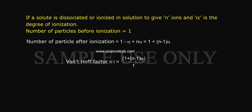Van't Hoff Factor I is equal to 1 plus N minus 1 into alpha by 1. Degree of ionization alpha is equal to I minus 1 by N minus 1.